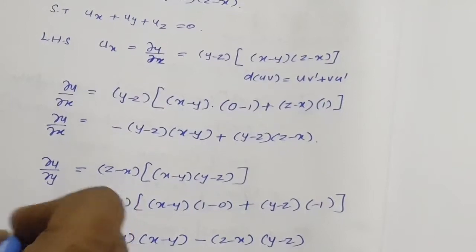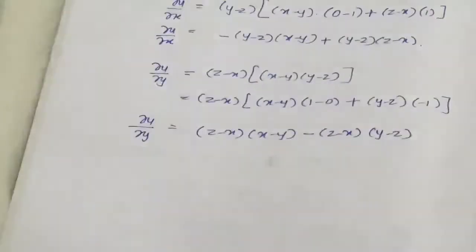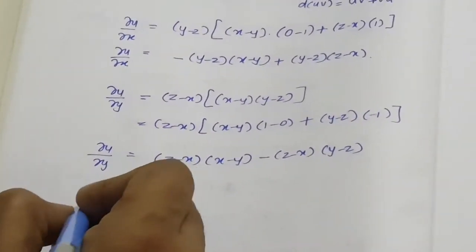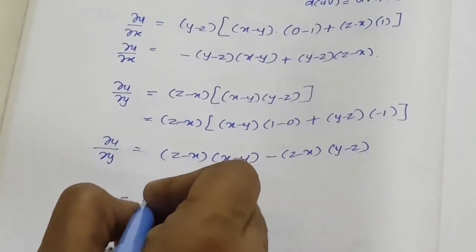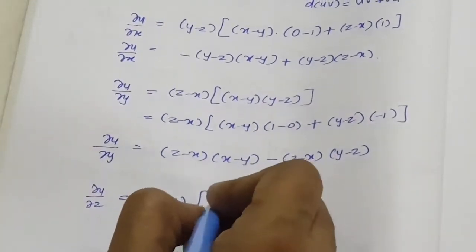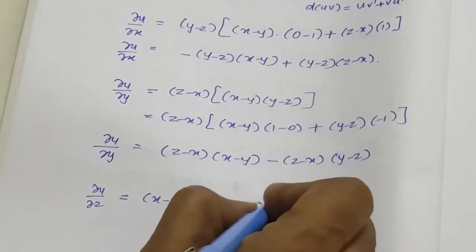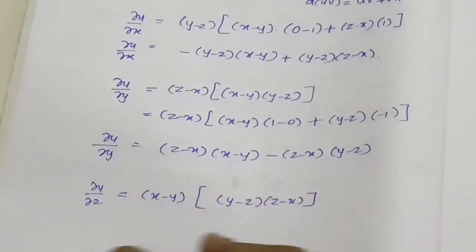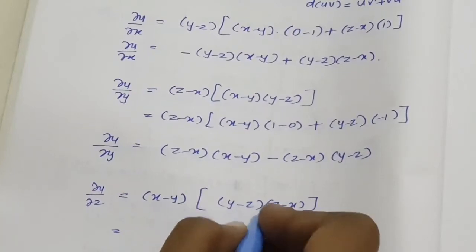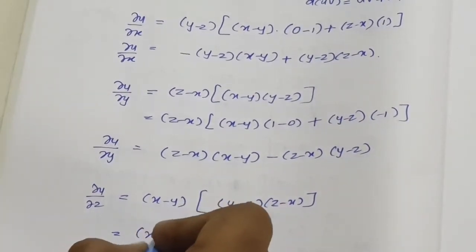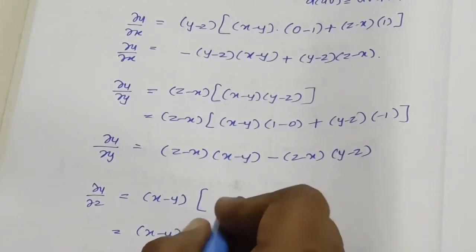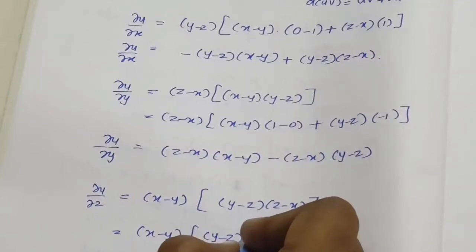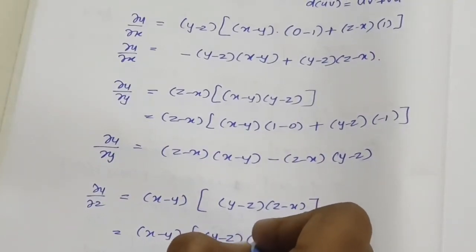Similarly, we find the partial derivative of u with respect to z. When differentiating with respect to z, x and y are constants. The terms containing z are differentiated using the product rule uv' + vu'. So (y minus z) kept constant, multiplied by differentiating (z minus x) with respect to z gives 1. Plus (z minus x) kept constant, multiplied by differentiating (y minus z) with respect to z gives minus 1.